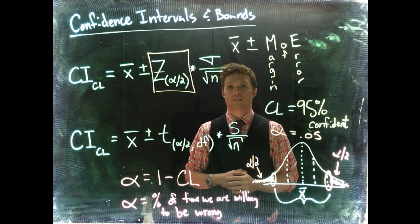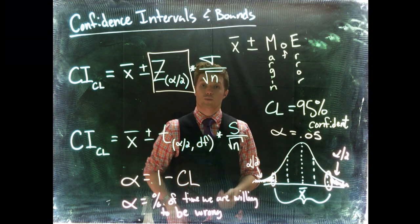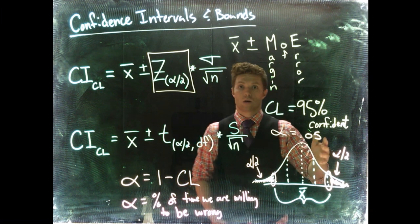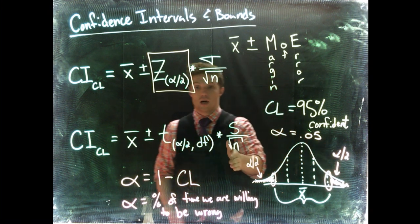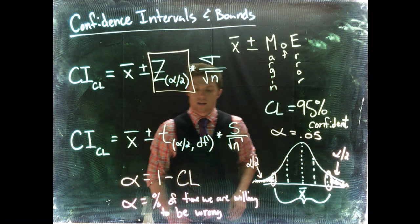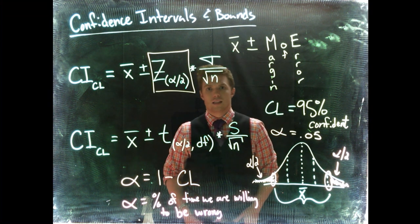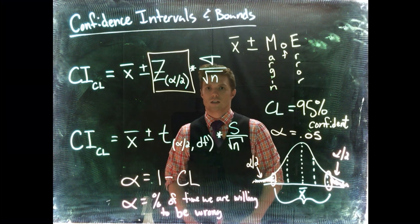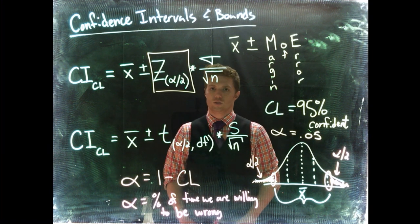But 5% of the time, the population mean will be outside of our range, either above or below. So alpha is just the percent of the time that we're willing to be wrong. Now you might say, I want to be right all the time. The problem is, is that if you do that, your confidence interval stretches out so wide that it's useless.